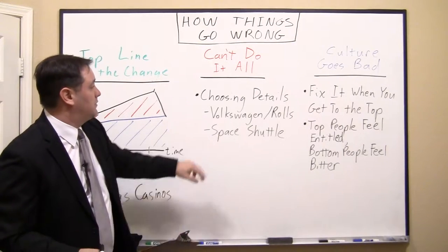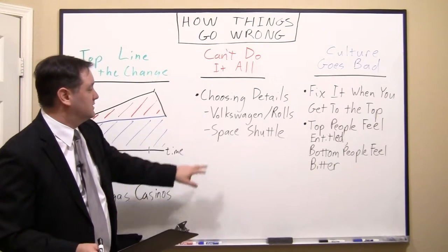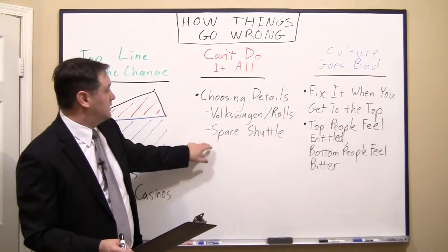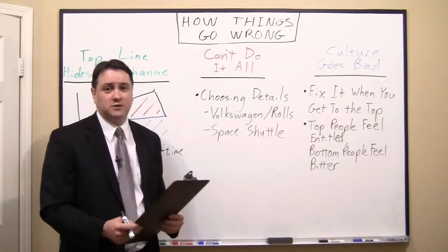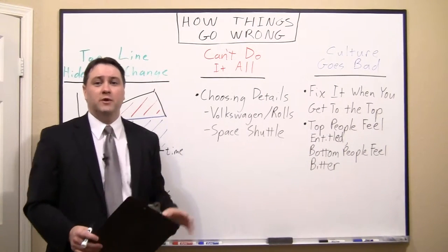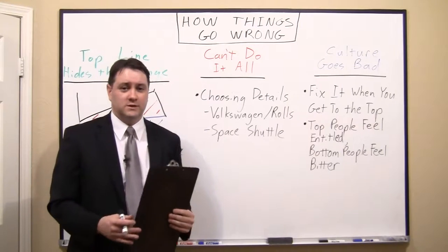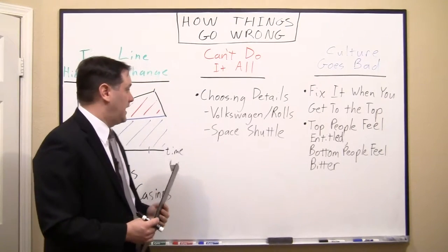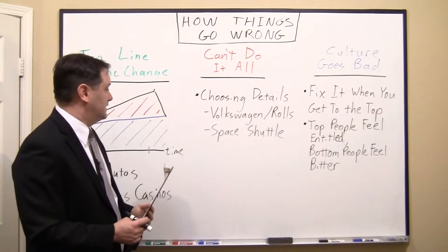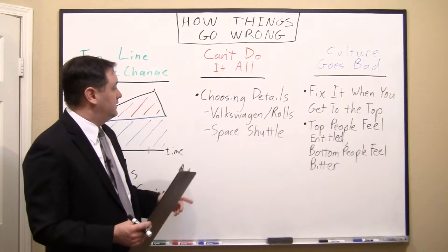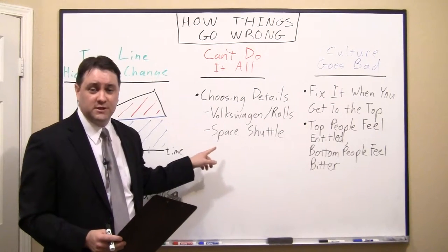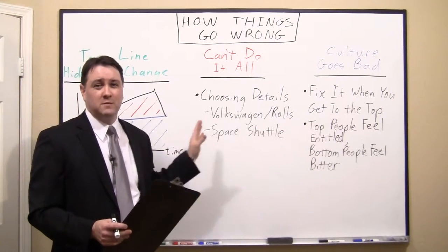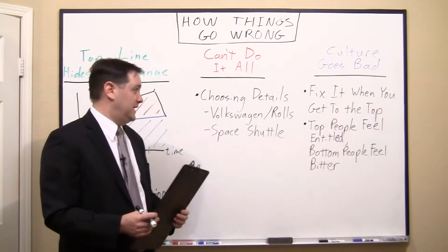Another example — and this doesn't have to be business; it can be any management, any team. A good example is the space shuttle. We have built five launchable space shuttles in the United States, two of which have been lost in catastrophic disasters. And the interesting thing is, in each of those situations, it was known what the problem was before the catastrophe, and oftentimes it was discussed by the engineering staffs.